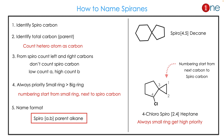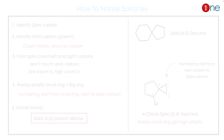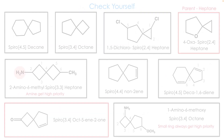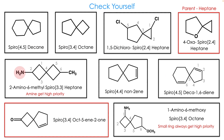Numbering always gives the smaller ring higher priority, even if it violates the priority rule of functional groups. The naming format will be: spiro[a.b]parent alkane.